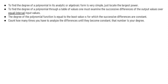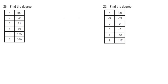Let's set an example. Here on the left side we have a table going by ones: 2, then 3, then 4, then 5, then 6. We must check that first — we definitely have equal interval input values, which is important before we proceed.